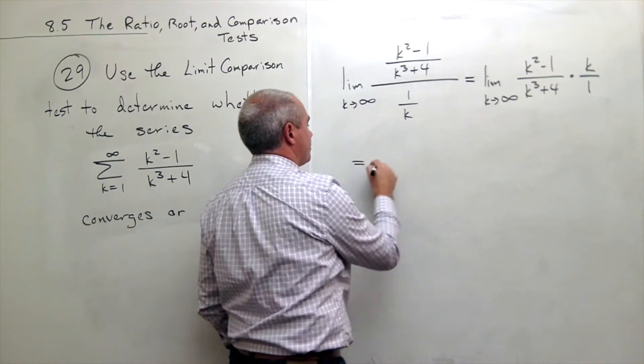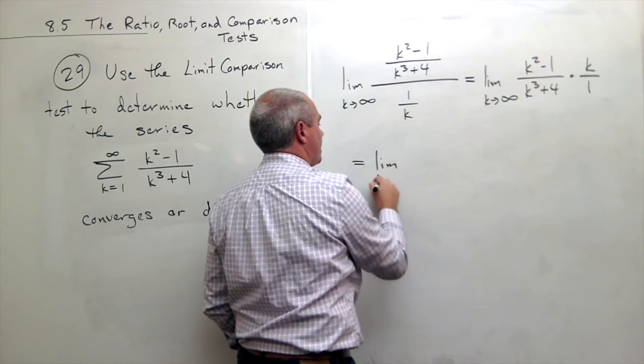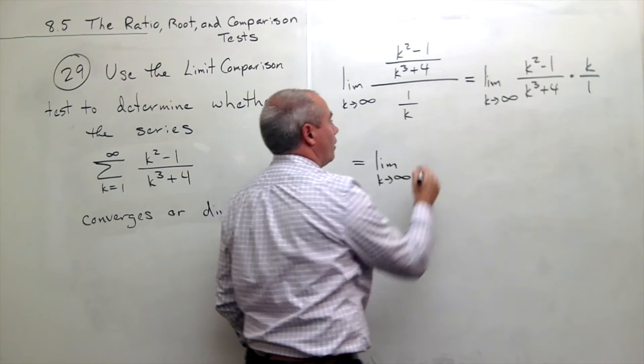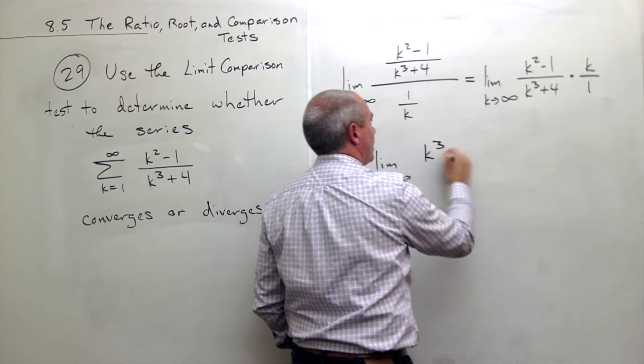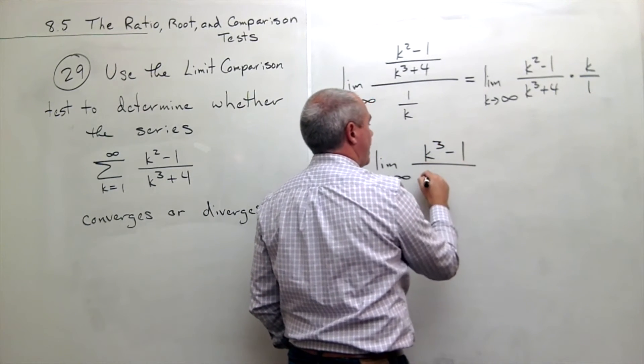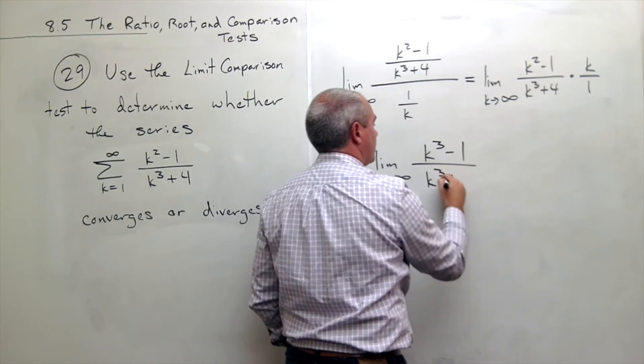If I were to multiply this through real quick, I get the limit as k goes to infinity of k cubed minus 1 over k cubed plus 4.